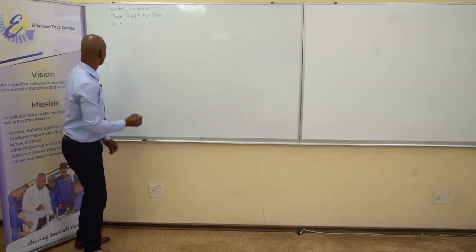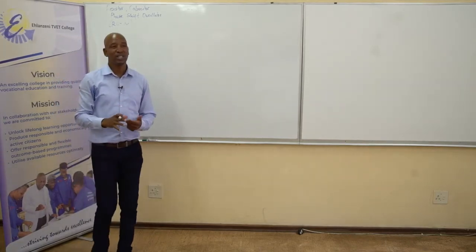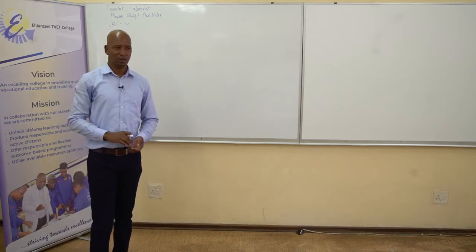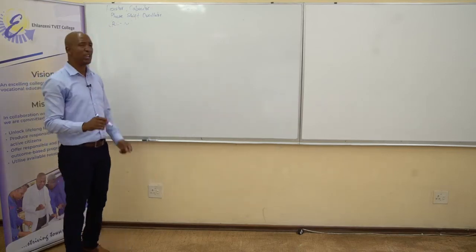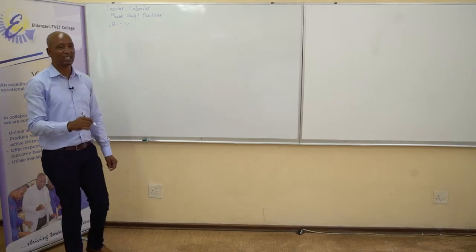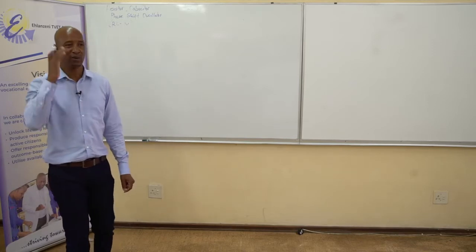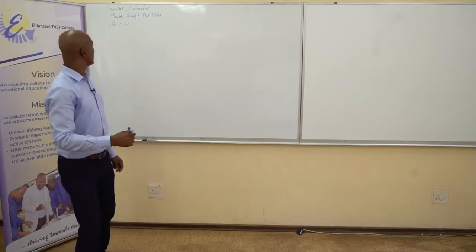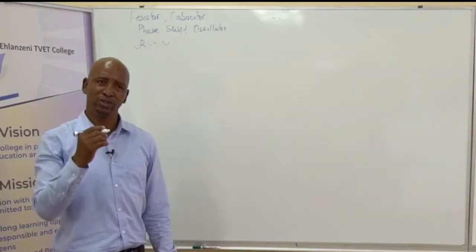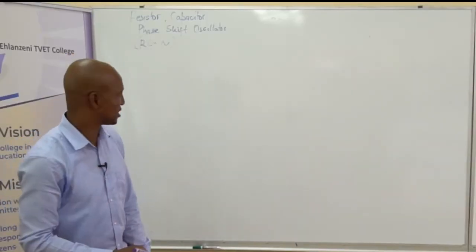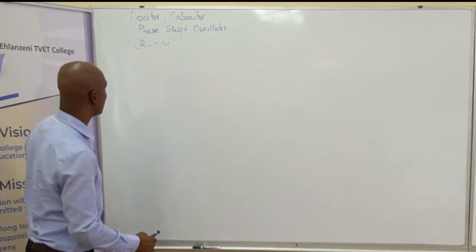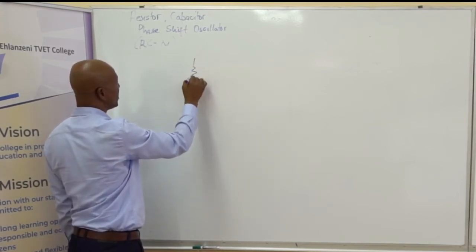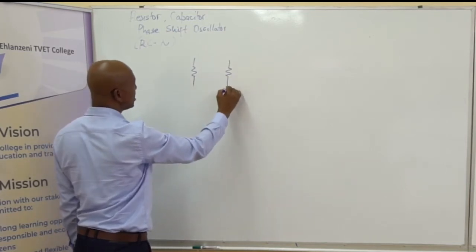Let us draw the RC phase shift oscillator. You will never know a diagram by simply looking at it in a textbook and saying you know it — it is practically impossible. You will have to draw the oscillator again and again, even at home, until you master it. Circuit diagrams are part of your assessment. So let's start. Remember, we said we need an amplifier for oscillation. I'll simply draw a common emitter configured amplifier.